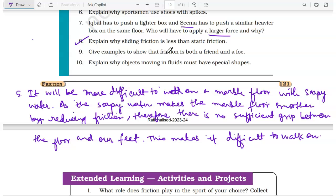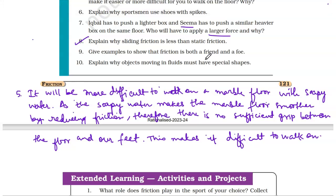Question number nine: give examples to show that friction is both a friend and a foe. See, friction acts as a friend also, friction acts as a foe also. Friction is actually a necessary evil. What do you mean by necessary evil? It is necessary - you need friction. Without friction, we cannot do a lot of work. And it's a foe also because it produces heat, it results in loss of energy, it results in wear and tear. So there are many examples to show.